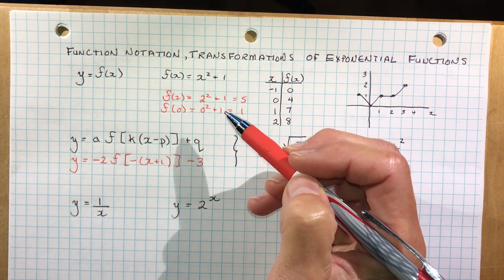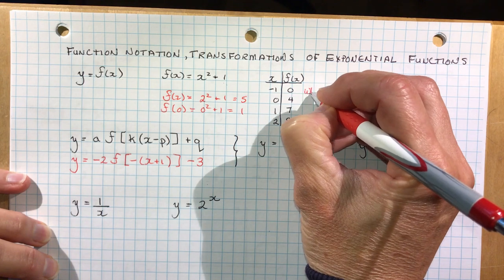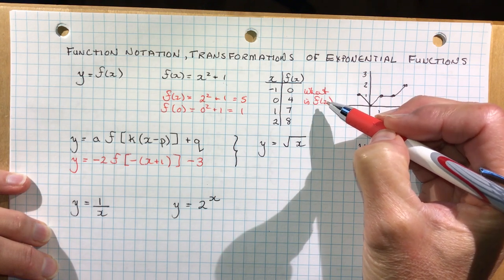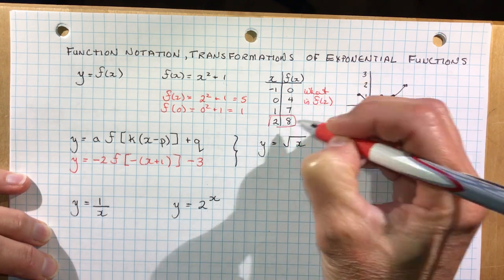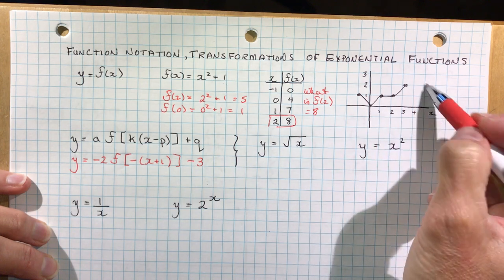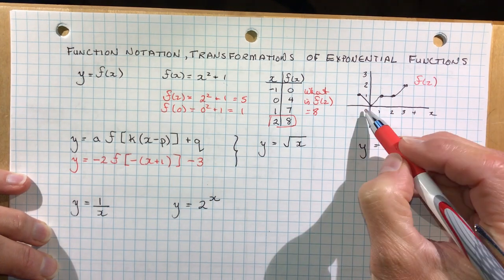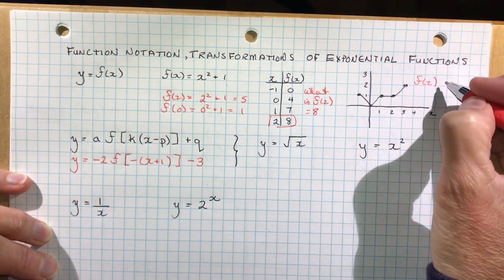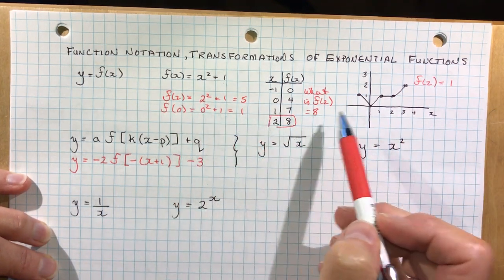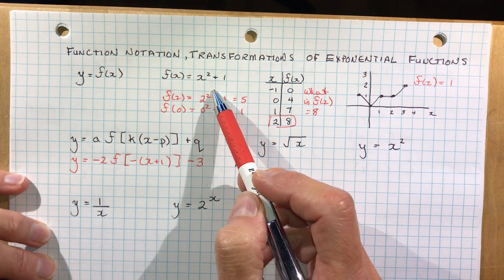You can also use function notation from a table of values. If I asked you what is f at 2, you'd say you're asking me what is the height of the function when x is 2, and your answer would be 8. You can also use function notation when you're using a graph. If I said what is f at 2, you'd look at when x is 2, what is the height of the function, and you'd say f at 2 is 1. So there are different ways to use function notation — from a graph, a table of values, or an equation. Generally it's an equation.